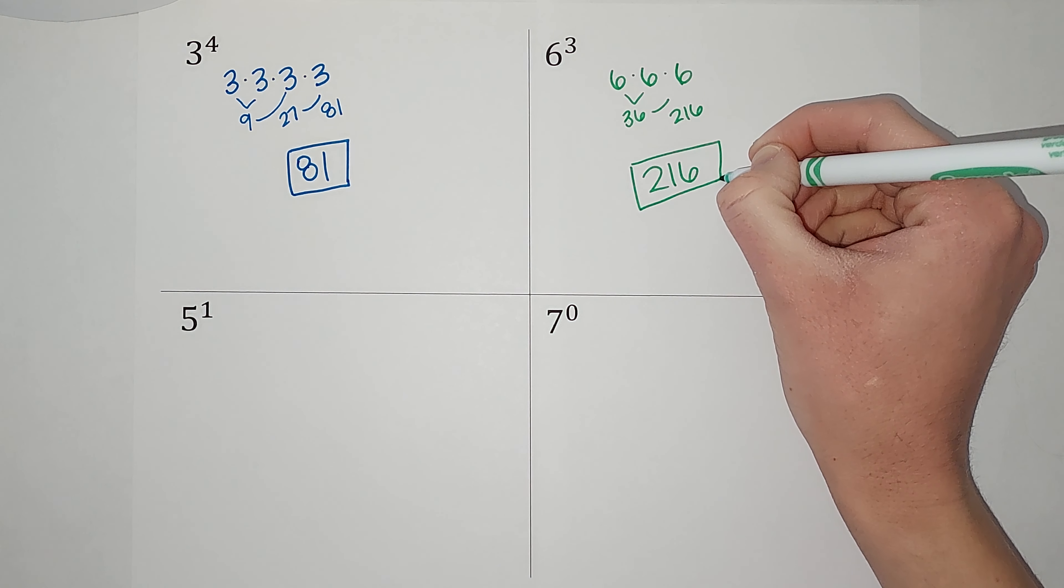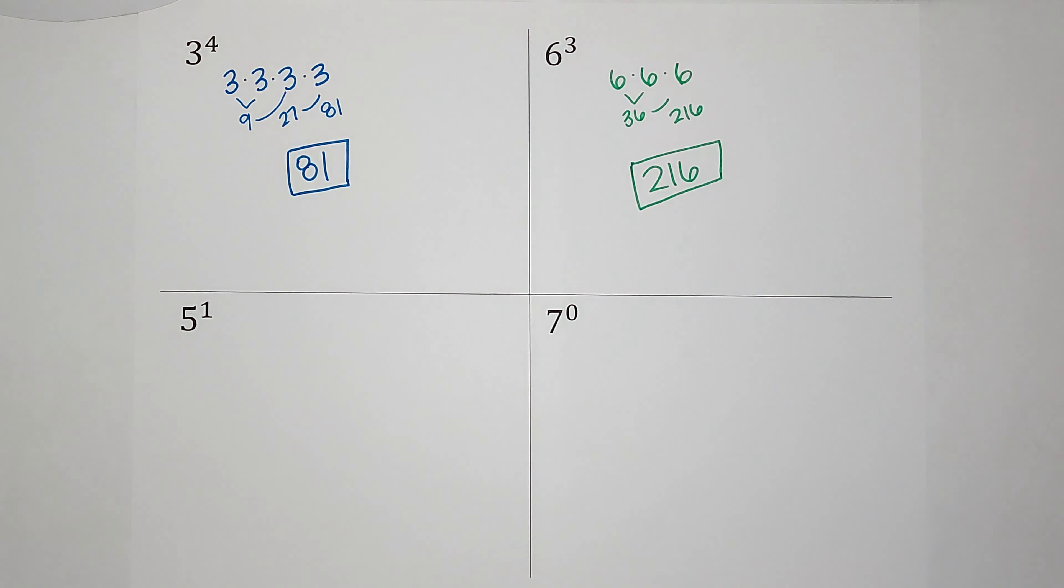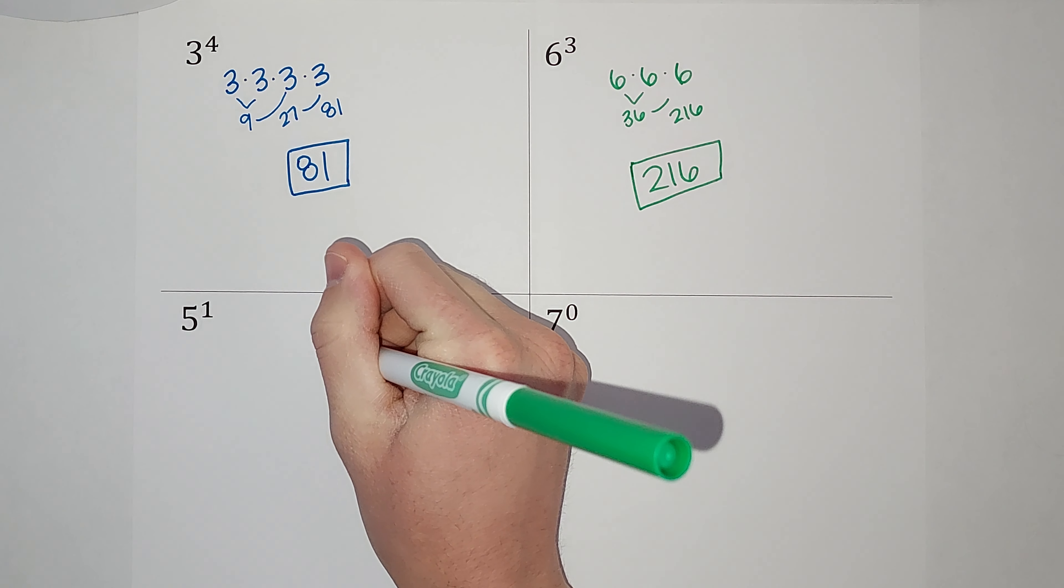These are two special ones. I mean, I say special but they're just noteworthy. So five to the first power, anything to the first power is just itself. So it's just five.